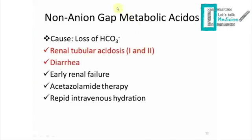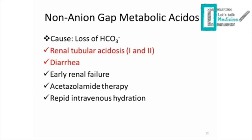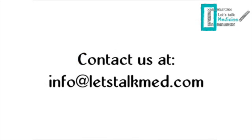For non-anion gap metabolic acidosis — caused by bicarbonate loss — the two most important examples to memorize are diarrhea and renal tubular acidosis types 1 and 2. Other causes include early renal failure, acetazolamide therapy, and rapid intravenous hydration. For anion gap metabolic acidosis, the cause is an increase in anions other than chloride. A common mnemonic is CARAMEL: Ketoacidosis, Aspirin, Renal failure, Methanol, Ethylene glycol, and Lactic acid — all increase acids and therefore unmeasured anions. Note: aspirin appears in the anion gap category, while acetazolamide is in the non-anion gap category.